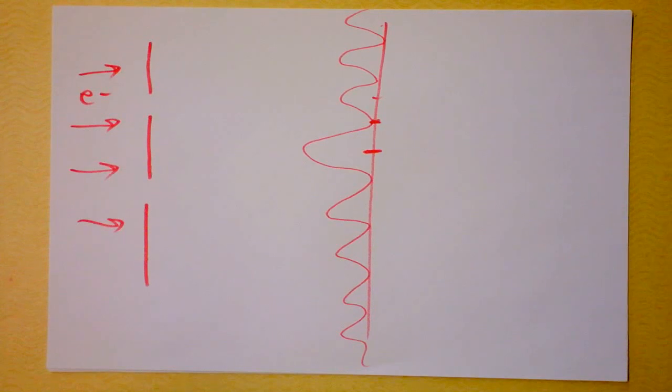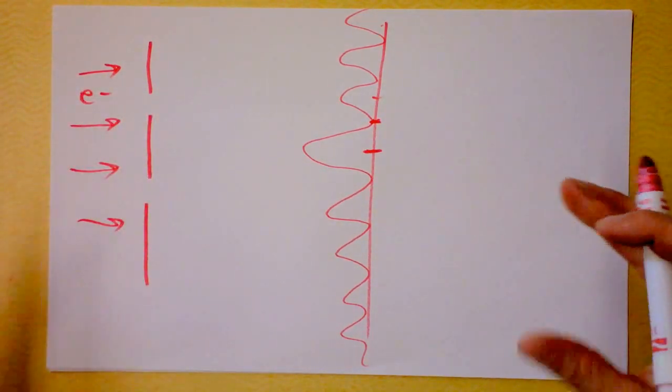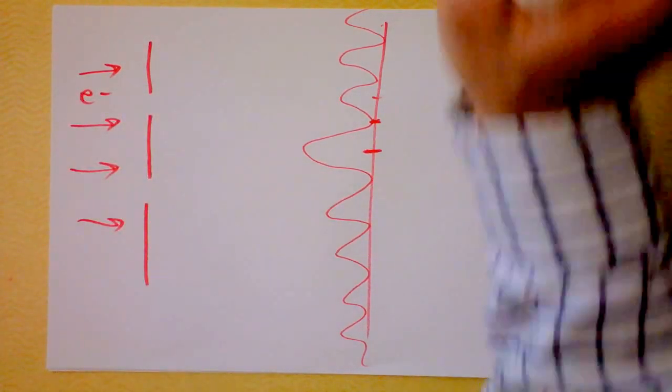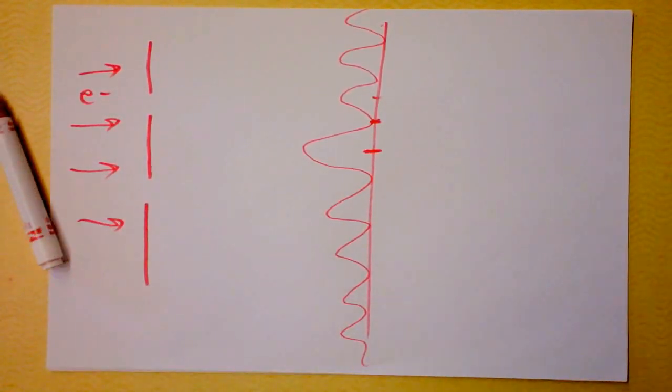They interact with each other. No. They interact with themselves. An electron goes through both slits simultaneously. And you're like, what? You can't go through both slits at the same time. So you get really mad. And you're like, no. No, no, no. We're going to check.